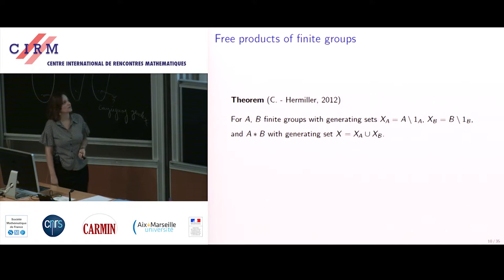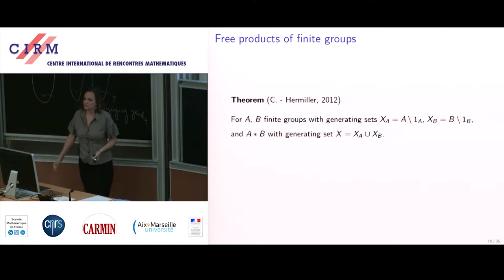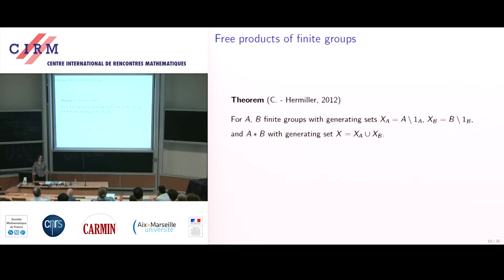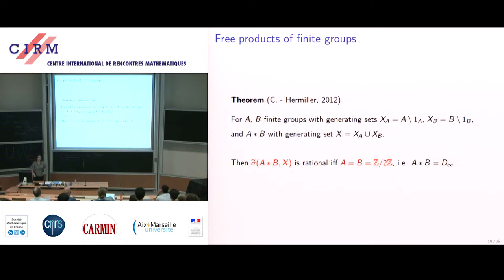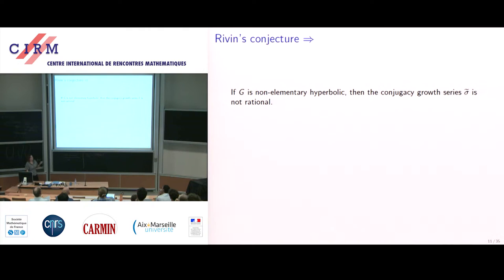Susan Hermiller and I then looked at the next easiest class after free groups: free products of finite groups. We noticed essentially the same behavior as Riven's — unless you have the dihedral group where everything is nice, the conjugacy growth series is far from rational; it is again an integral of the same form. This is what motivated Riven's conjecture: after seeing free groups, he wondered what happens for hyperbolic groups.